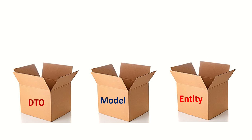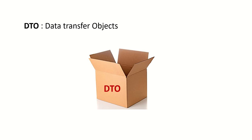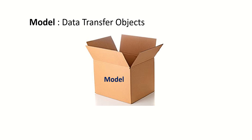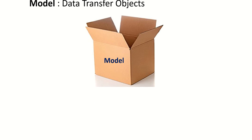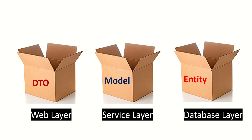Today we will talk about DTO, model, and entity with real-life examples and dig into the code to understand why we need these. We always get confused between DTO, model, and entity because the boxes look similar, the color is similar, everything is the same — only the name is different. That is why we get confused.